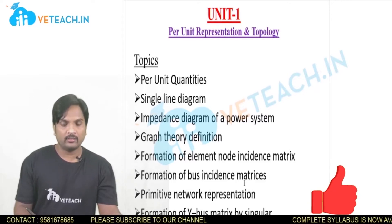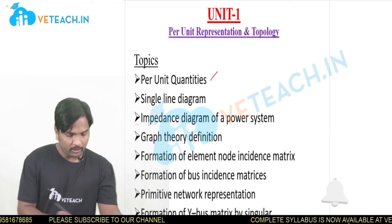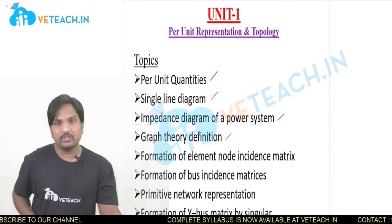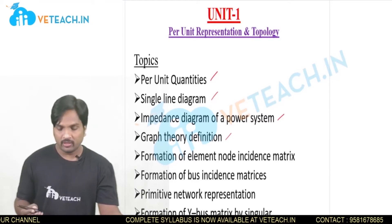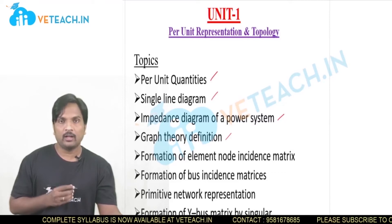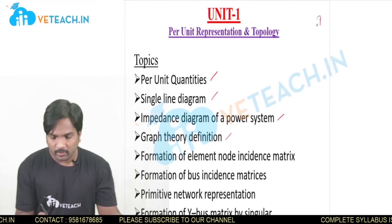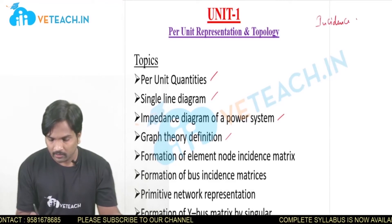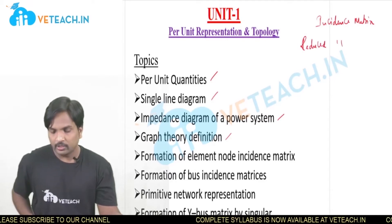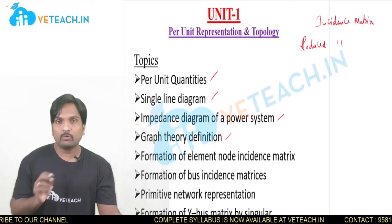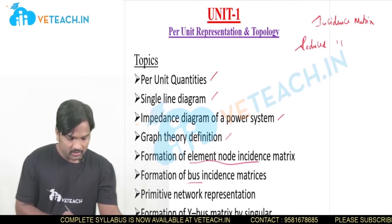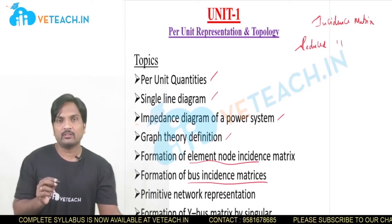Welcome to vteach. In the last class we discussed per unit quantities, single line diagram, impedance diagram of a power system, and graph theory definitions — including graph, tree, subtree, nodes, tweaks, links, incidence matrix, and reduced incidence matrix. I told you that incidence matrix and reduced incidence matrix are similar to element node incidence matrix and bus incidence matrices, but there is a small difference between the two.